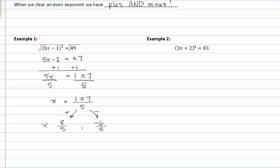In example two, we again have an even exponent, and to undo the exponent we're going to take the fourth root of that. Whenever we take an even root, we have to allow for the positive and the negative options. So we have to write plus or minus.